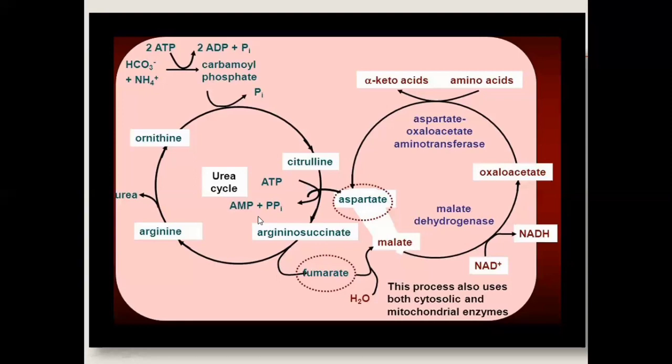In the urea cycle, two ATP are used in one step and one ATP is used in another step, so three ATP total are consumed in the urea cycle. The fumarate is regenerated here; fumarate enters as malate and malate enters the TCA cycle. With the help of the enzyme malate dehydrogenase, NADH is produced.